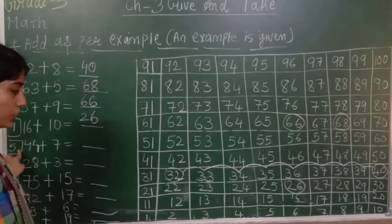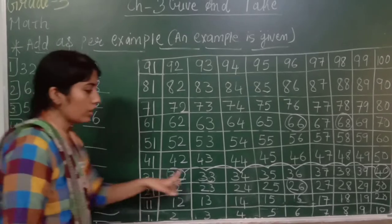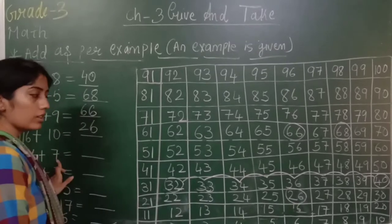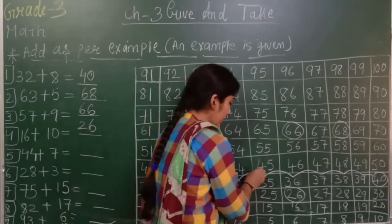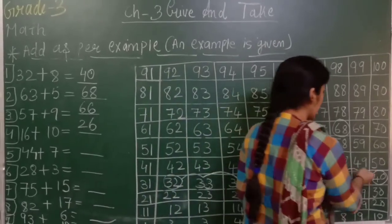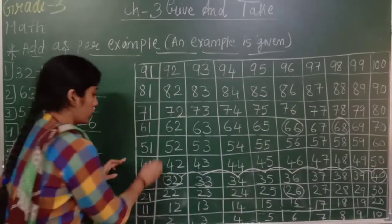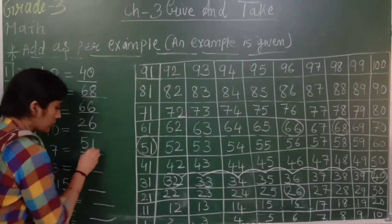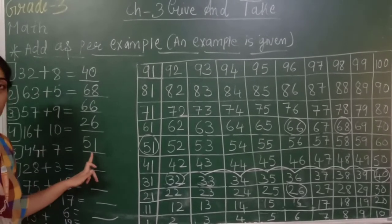Next, fifth number: 44 plus seven. Where is 44? Here. Humko kitne steps chalna hai? Seven. One, two, three, four, five, six, seven. Toh answer kya hai? 51. When we add 44 plus seven, answer will be 51.